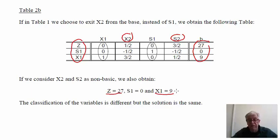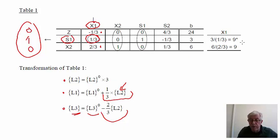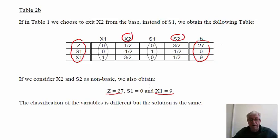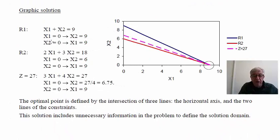When we face a situation like this, in which we have two possibilities to extract one of the variables from the base, we will have fewer variables different from zero than the number of restrictions. To understand what's happening, we need to obtain the graphical solution. We need to identify first the solution domain, starting with the boundary defined by the restrictions.